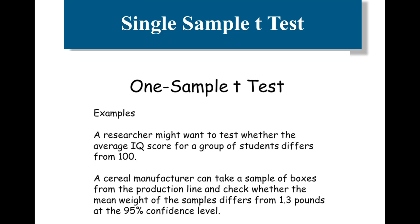Some examples of a one-sample t-test: a researcher might want to test whether the average IQ score for a group of students differs from 100. A cereal manufacturer can take a sample of boxes from the production line and check whether the mean weight differs from 1.3 pounds at the 95% confidence level. You're trying to find out: does this group differ from the population?